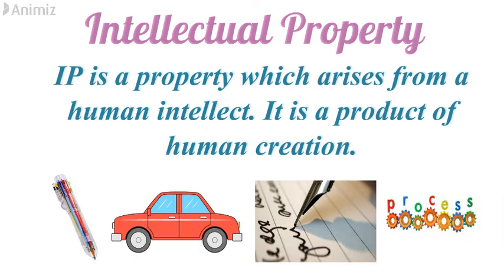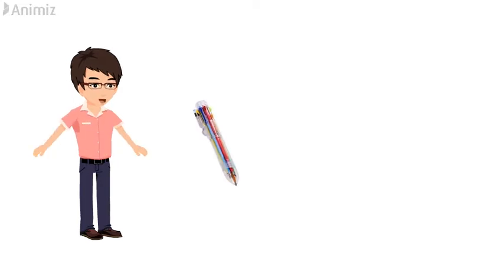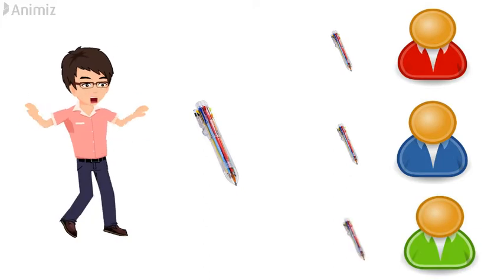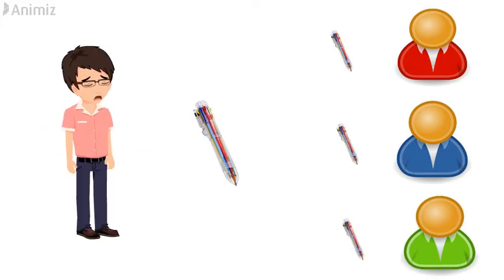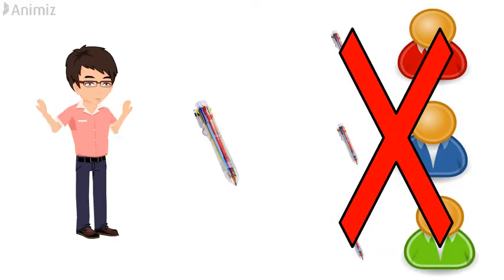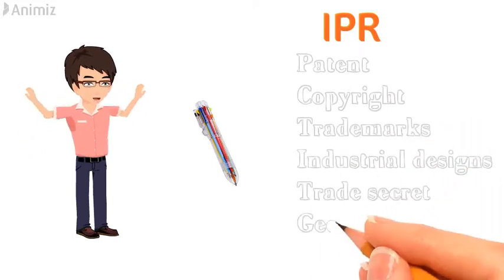But why do you require rights to protect these intellectual properties? Suppose you are an inventor and after years of research and hard work you have created a pen with multiple refills, and it is the first in the world. But as soon as you release it in the market, many people will try to copy it and sell it at a very cheap rate because they have not invested in research. By this you will be very demotivated. So how can you exclude others from copying your invention? You are the first inventor and you would like to be rewarded so that keeps you motivated for inventing further. This exclusivity and reward is given by various types of intellectual property rights.